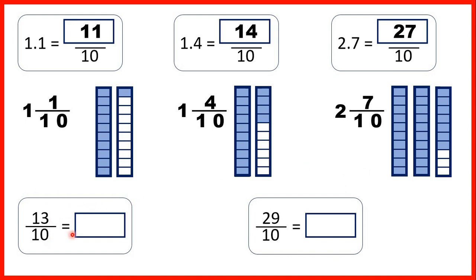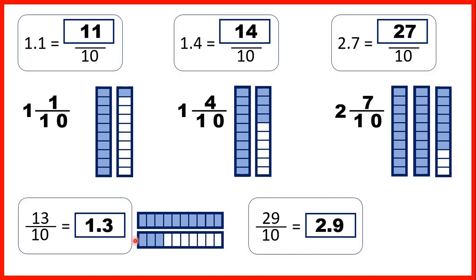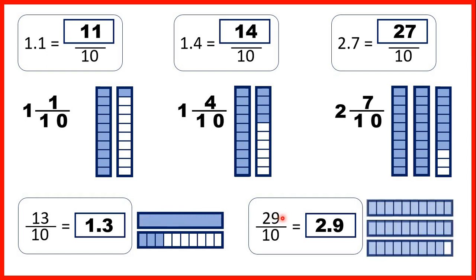Thirteen tenths is what as a decimal? That's 1.3, because ten of these tenths can make one whole, and then we have three tenths left over. Twenty-nine tenths is what as a decimal? That's 2.9, because if we have twenty tenths we can exchange for two wholes, and then we have nine tenths left over. We can see thirteen tenths on the fraction bar — each piece is one tenth and we have thirteen of them — and we can exchange ten tenths for one whole. For twenty-nine tenths, we can exchange twenty of these tenths for two wholes, and then we have nine tenths left over.